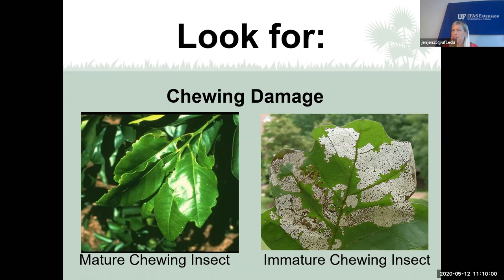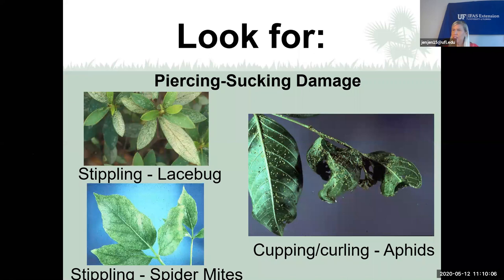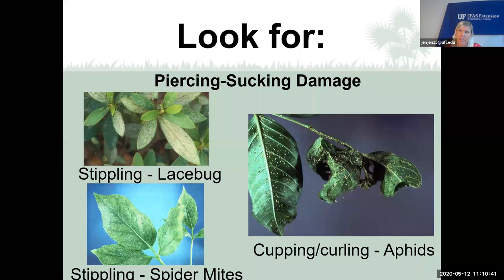Also look for piercing-sucking damage from soft-bodied insects such as aphids, spider mites, lace bugs, and mealybugs. They don't chew holes but have a straw-like mouthpart they insert into new growth to suck out the plant's juices. This can cause leaves to become distorted, as seen on the right photo, or discolored — like the stippling effect caused by lace bugs on azalea or by spider mites. The insects suck out the chlorophyll, leaving behind that discoloration.